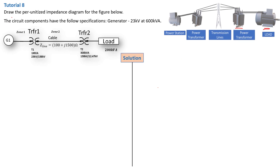The problem statement says: draw the per unitized impedance diagram for the figure below. The circuit components have the following specifications. We have a generator which is a power station generating 600 kilovolt ampere at the 23 kilovolt potential. Then we have a step-up transformer. The voltage is being stepped up to 238 kilovolt. We step it up for efficiency — to reduce the losses.